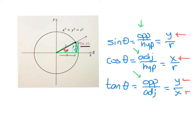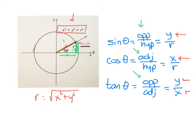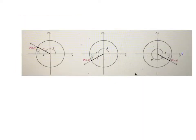Start thinking about sine being y over r, cosine being x over r, and tangent being y over x — or sine over cosine. R is a big deal: R is basically the radius of the circle drawn from the origin to that point. R squared equals x squared plus y squared — that's the Pythagorean theorem. Anytime you need R, take the square root: R equals the square root of x squared plus y squared.